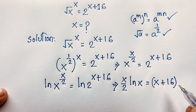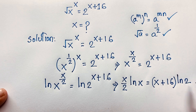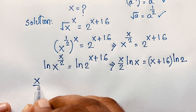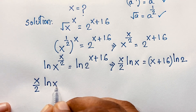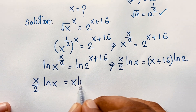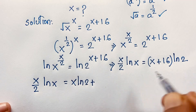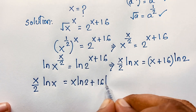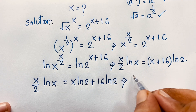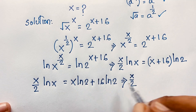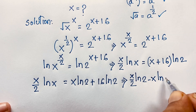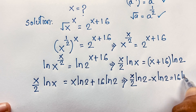The exponent moves in front, and here is ln 2. So at this moment: x over 2 times ln x is equal to x times ln 2, which is x ln 2, plus 16 times ln 2, which is 16 ln 2. Then I move the x ln 2 term to the left side: x over 2 ln x minus x ln 2 is equal to 16 ln 2.